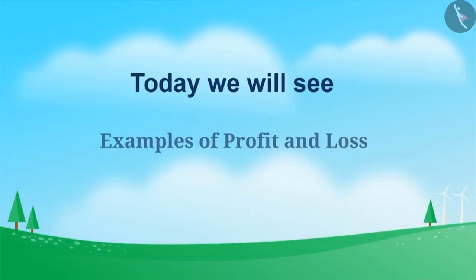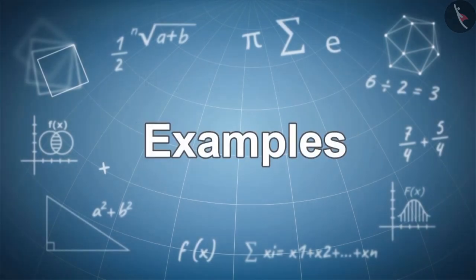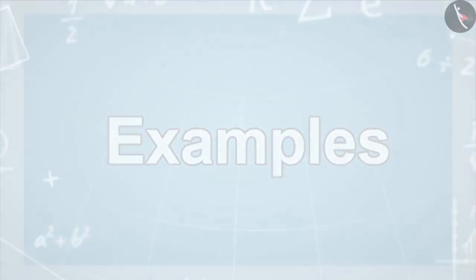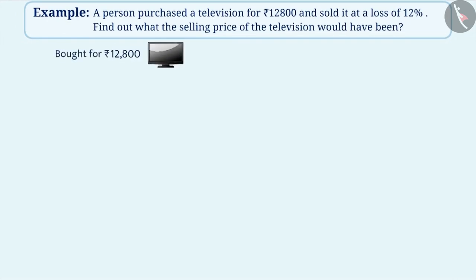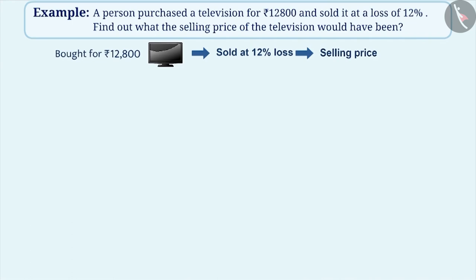Today, we will see some examples of profit and loss. Example 1: A person purchased a television for 12,800 rupees and sold it at a loss of 12%. Find out what the selling price of the television would have been.